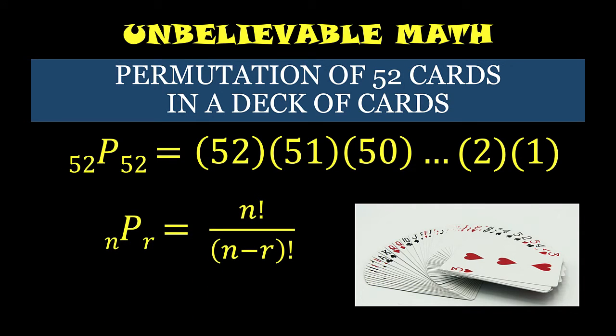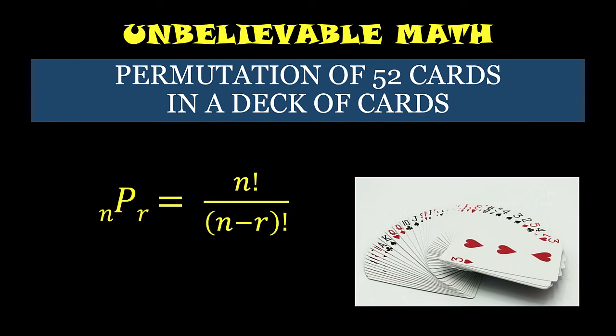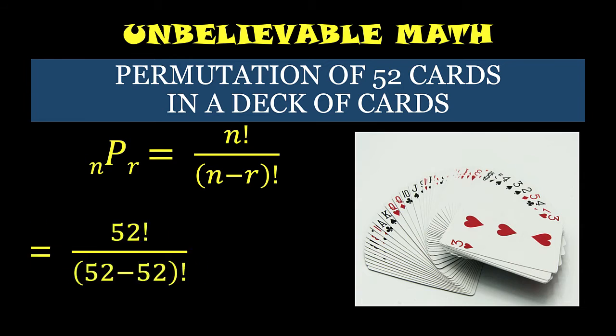Another way of computing this permutation is to use this formula. The permutation of n objects permuted r at a time is equal to n! / (n - r)!. So in this case, our n is 52, our r is 52.